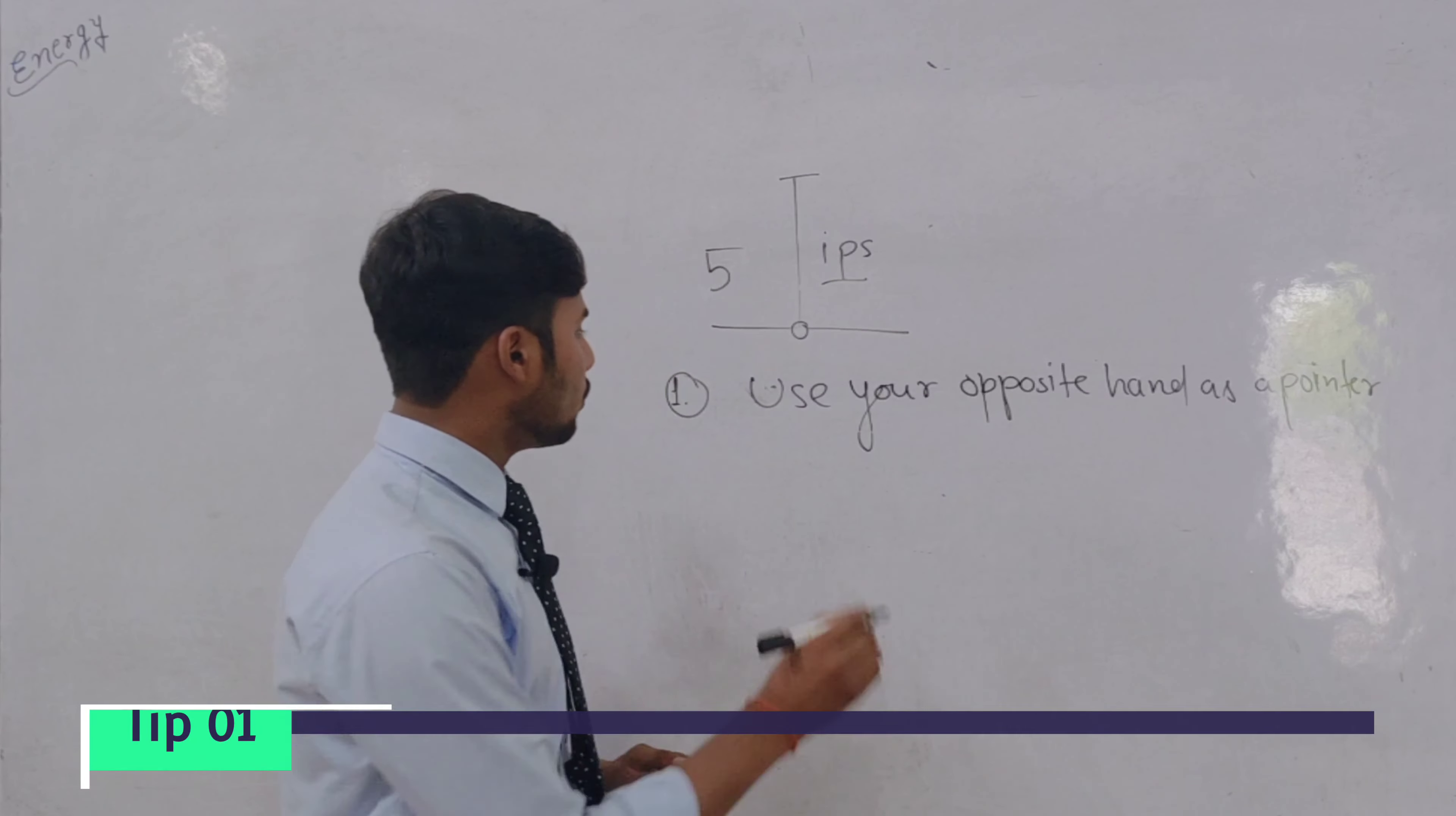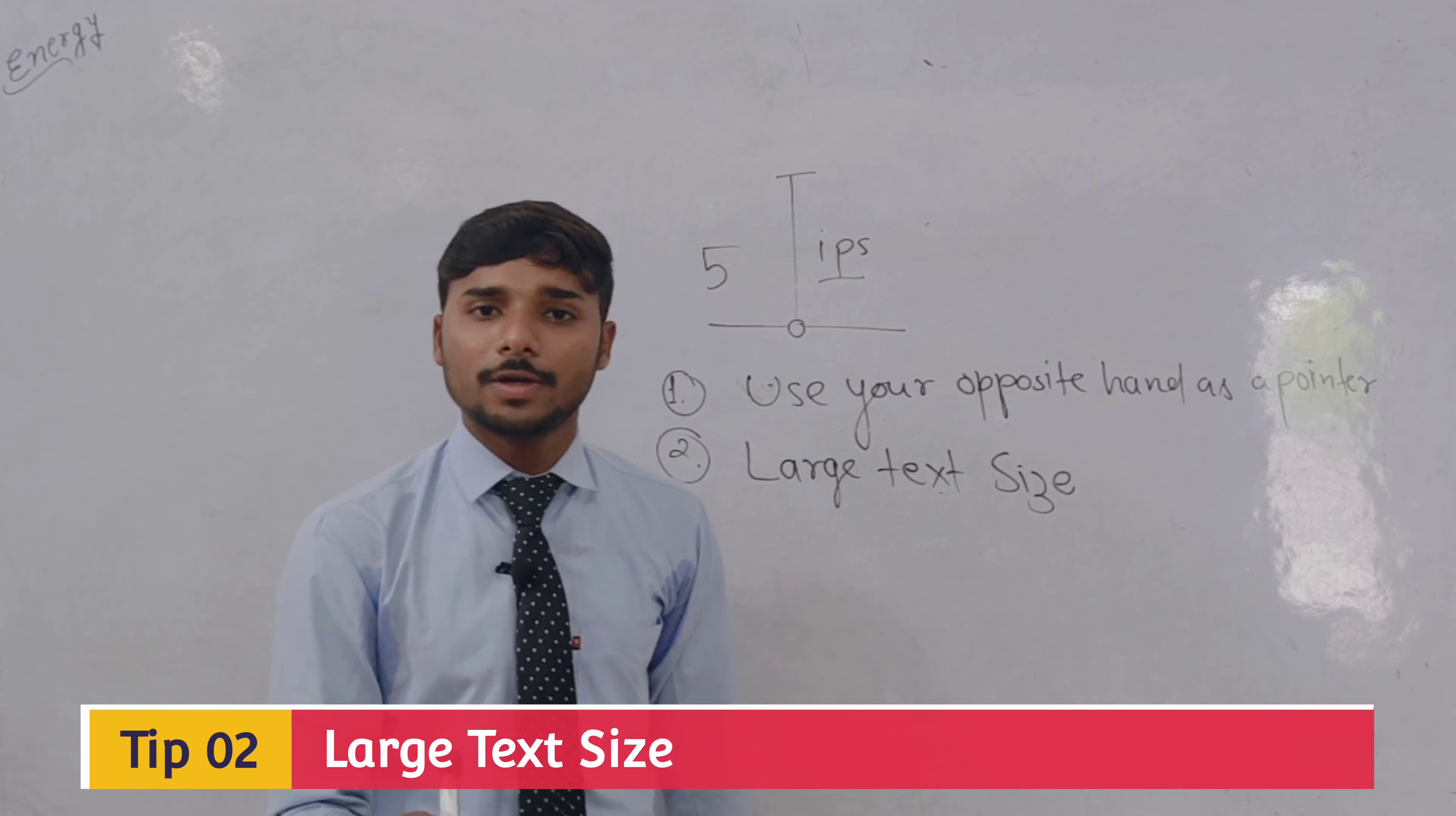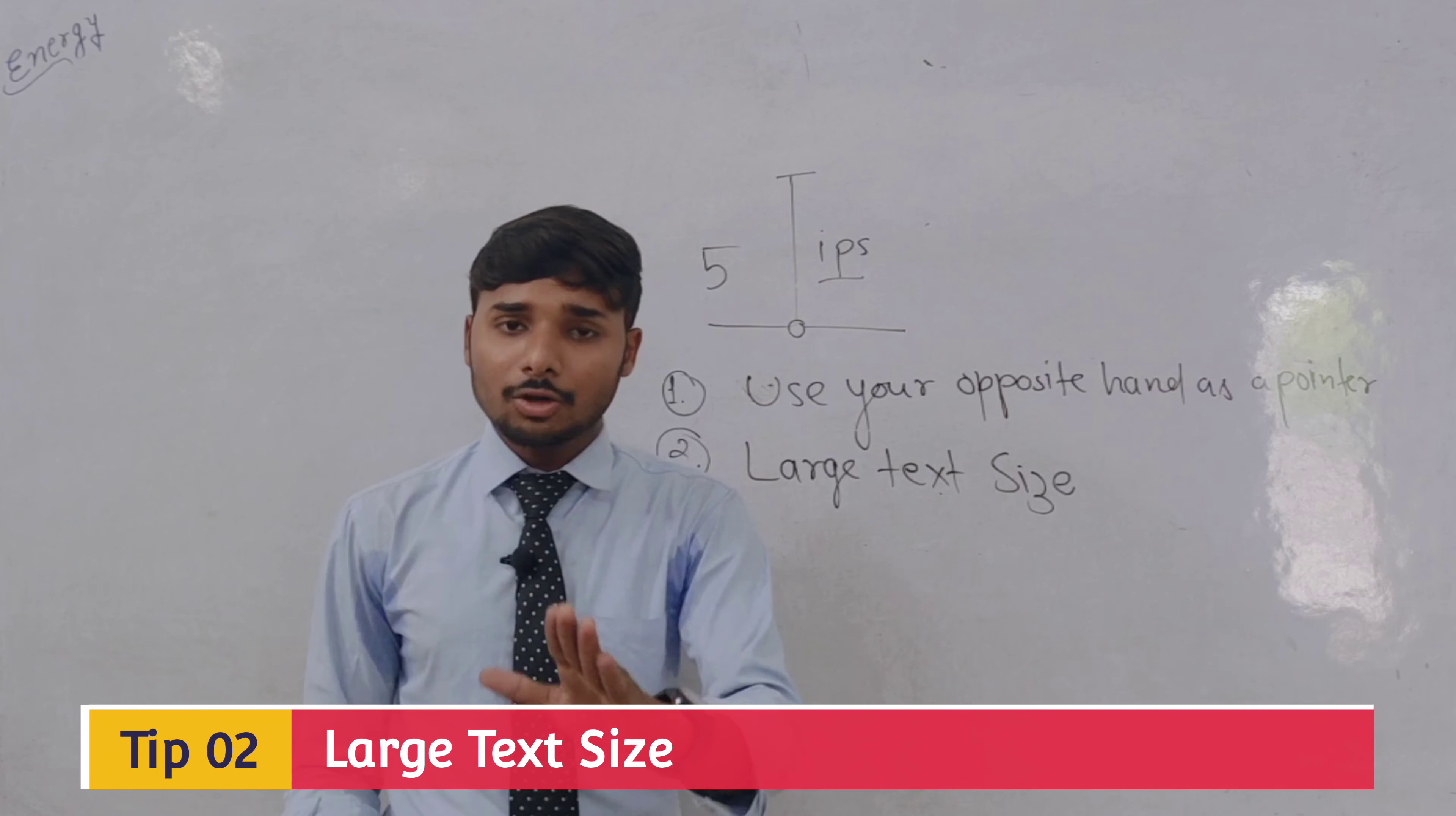Second tip. Tip number two. The very special tip: Large text size. What happens with all of us? When we do first time boarding, when we are writing on the board, we are writing very small, like we are writing in the copy. The same way. So the audience is not visible. The audience is not able to understand.